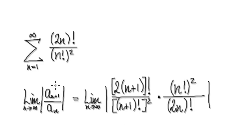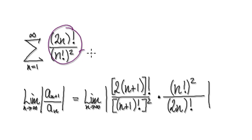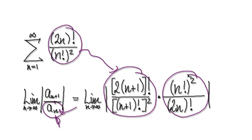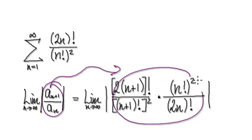When it comes to the ratio test, we always need to compute this value: A_{n+1} divided by A_n. So A_{n+1} would be this whole thing here, and then divided by — that's the same as multiplying the reciprocal of A_n, which would be this. So this whole thing here would then become this whole thing here.